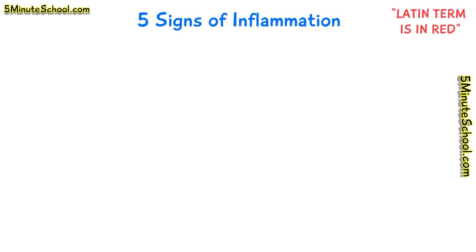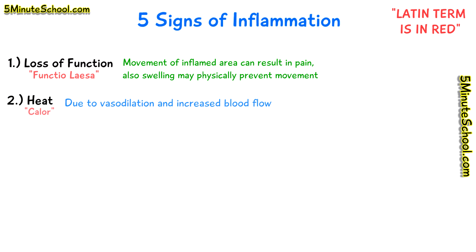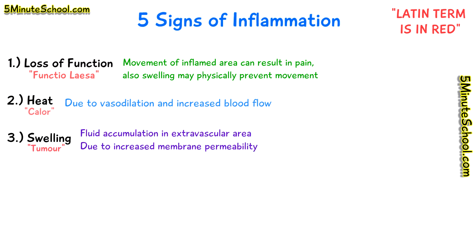There are five typical signs of inflammation. We have loss of function, and this is due to the fact that movement of the inflamed area can result in pain, and the presence of swelling may physically limit movement. We have heat, which is due to increased blood flow to the area caused by dilation of blood vessels. We have swelling, which is because of fluid accumulation in the extravascular area as part of the inflammatory process.